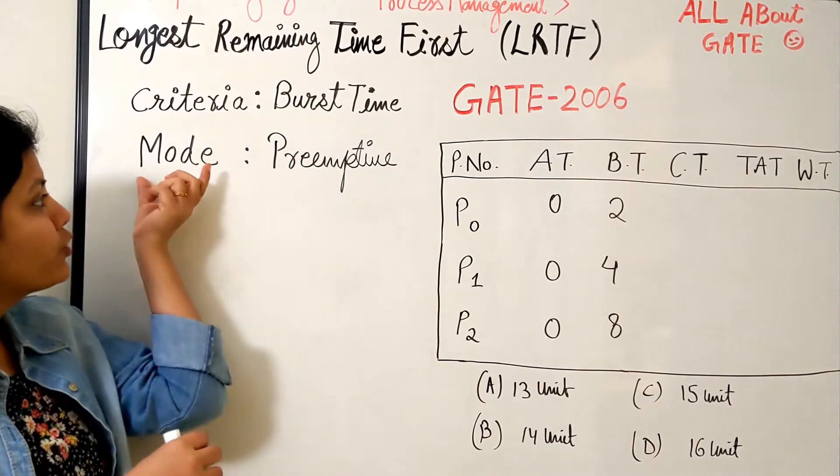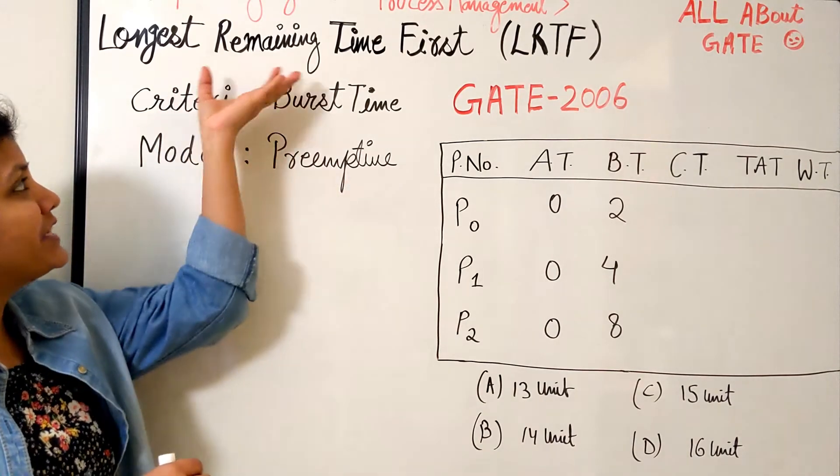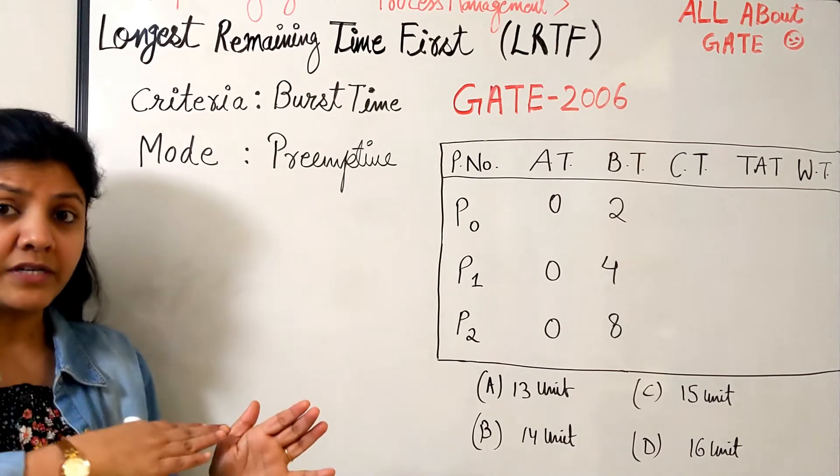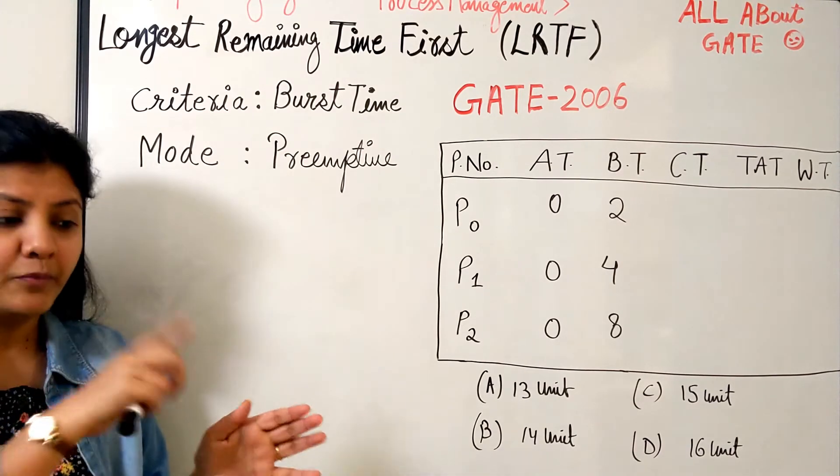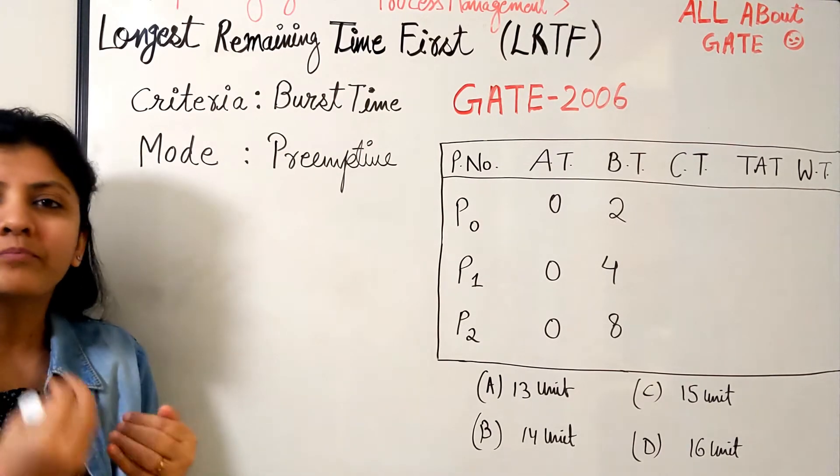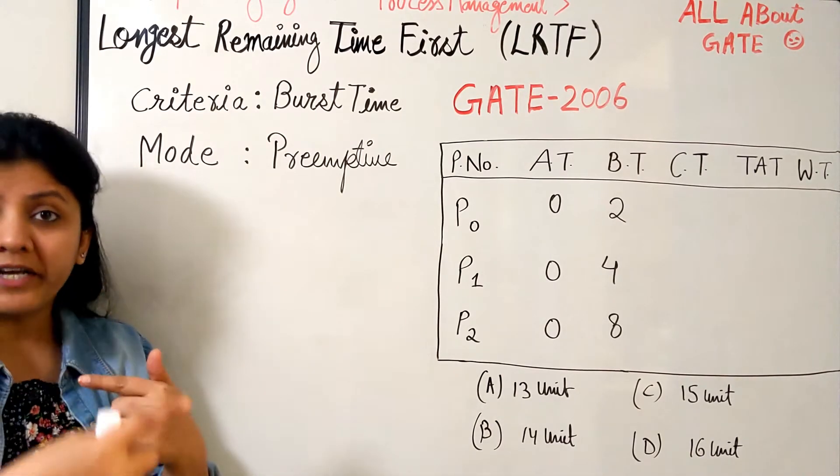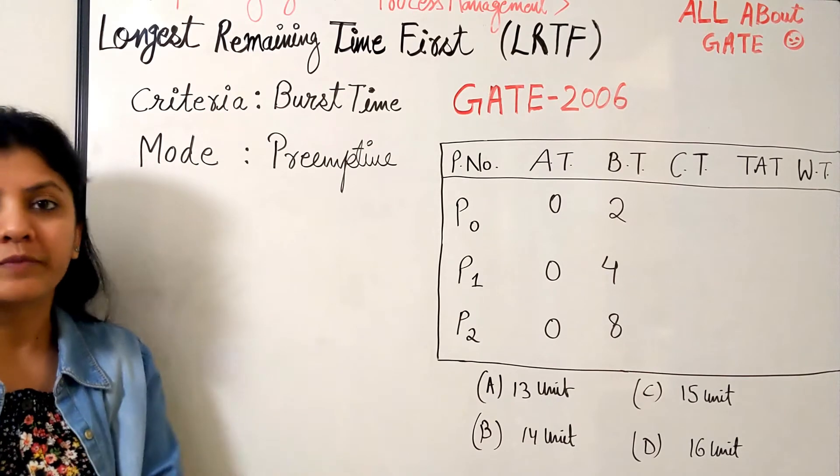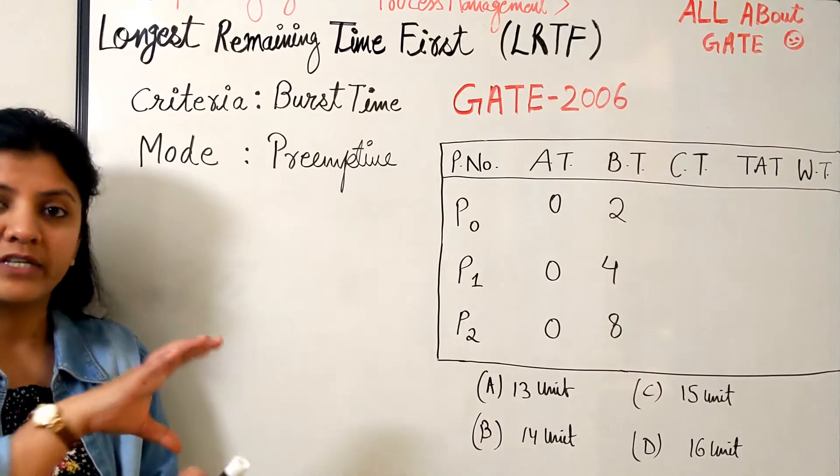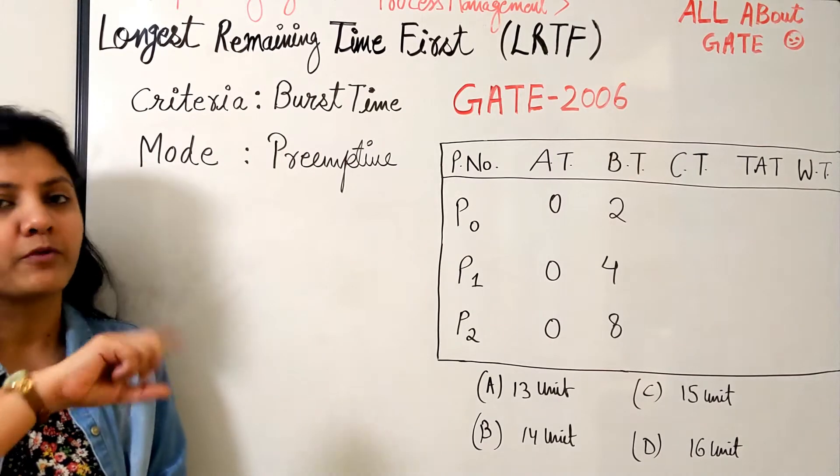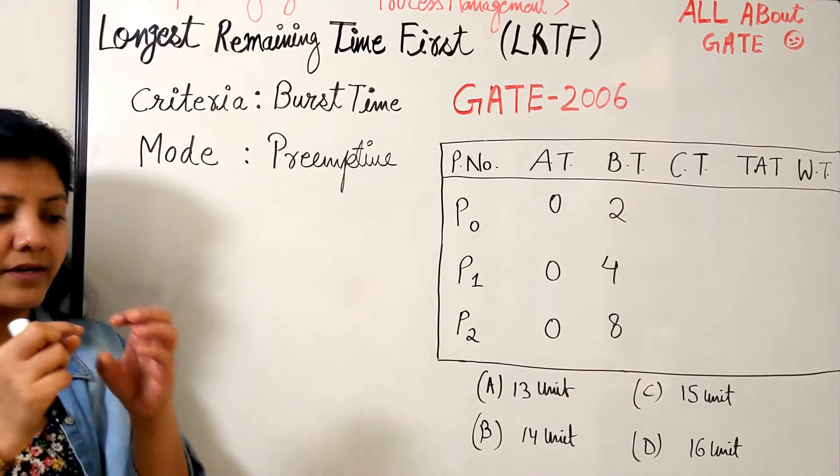The mode of execution is preemptive. Whenever it comes to the term 'remaining time', remaining means whatever is left and whatever are newly coming up, you have to make a comparison. That simply means you are going to preempt the process. Without preempting a process, you will not look at the remaining time.